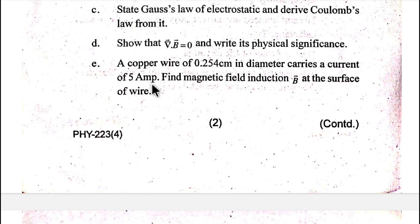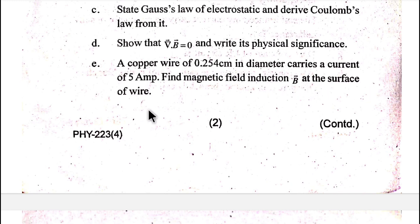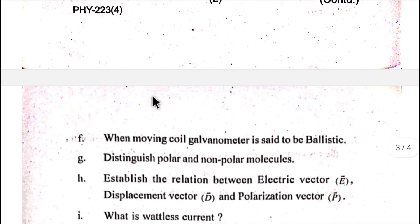A copper wire of 0.254 centimeter in diameter carrying a current of five ampere — find magnetic field induction B vector at the surface of the wire.